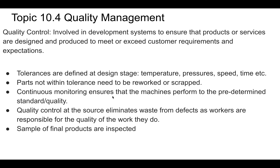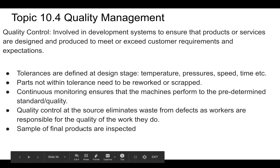We want to continuously monitor machines to make sure that they are performing to predetermined standards and qualities. Quality control at the source eliminates waste from defects, as workers are responsible for the quality of the work they do. You're trying to make sure that they are eliminating waste defects by doing the work they're meant to be doing. Usually samples of the final products are inspected.